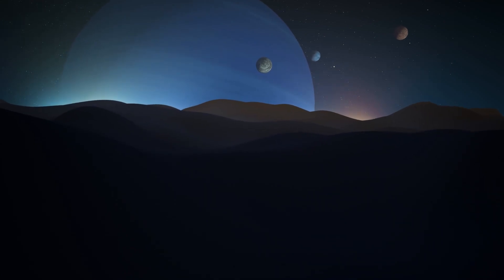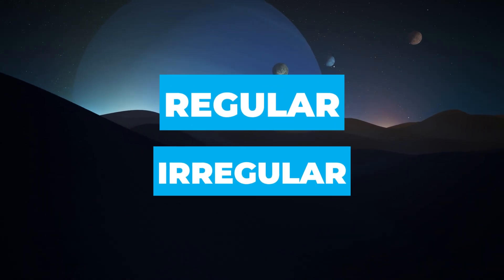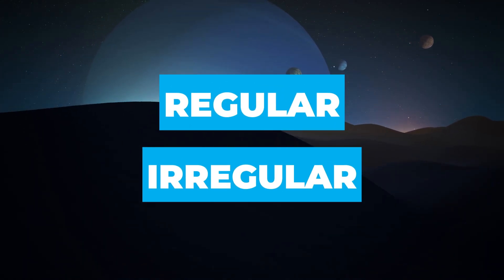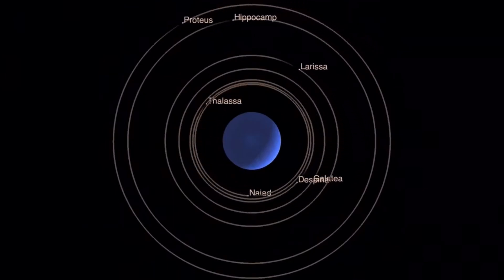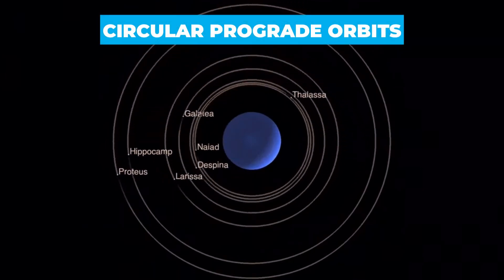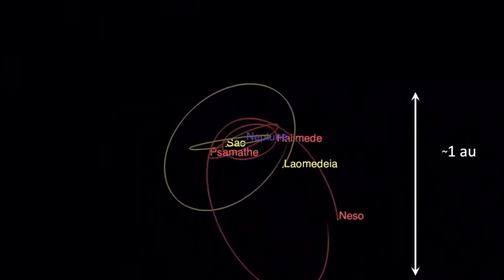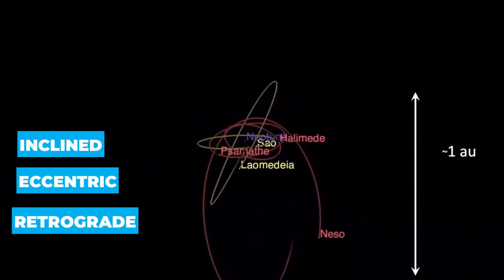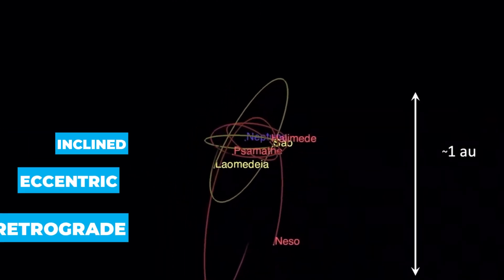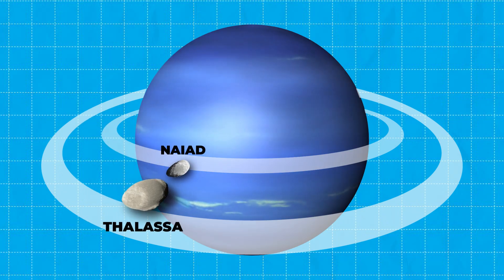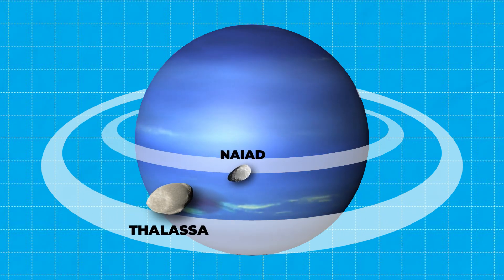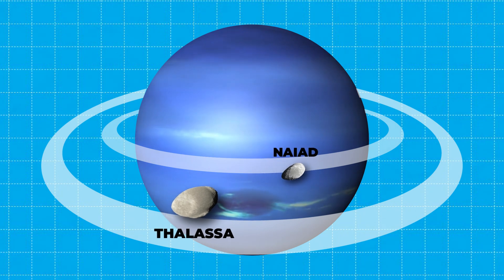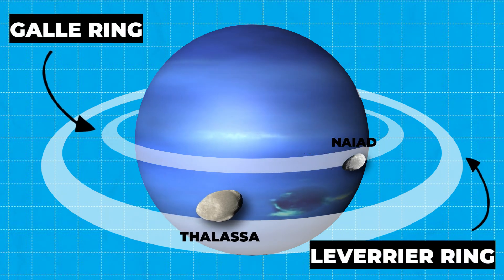Neptune's moons can be categorized into regular and irregular groups based on their orbits. Regular moons follow circular prograde orbits along Neptune's equatorial plane, while irregular moons have inclined, eccentric, and often retrograde orbits. The inner moons, like Naiad and Thalassa, are closely associated with Neptune's rings, orbiting between the Gall and Le Verrier rings.